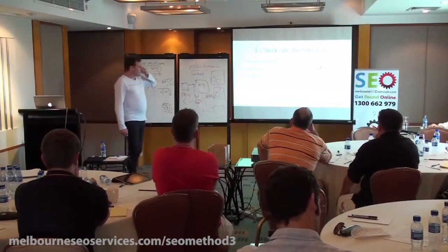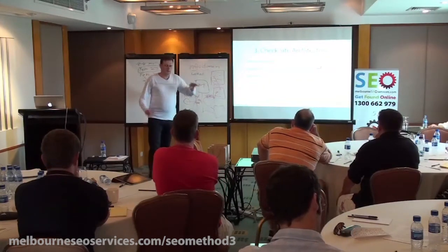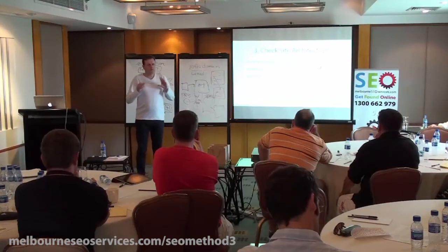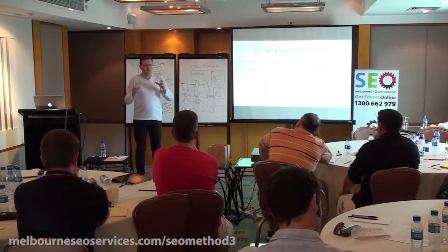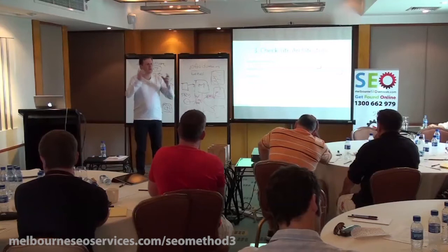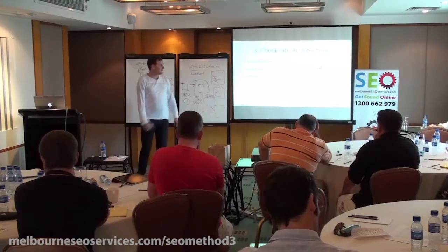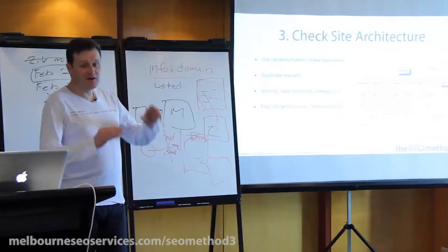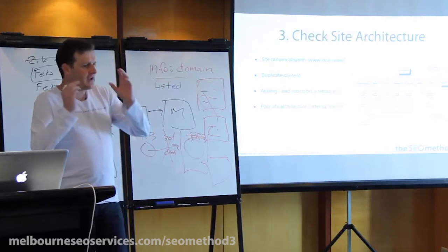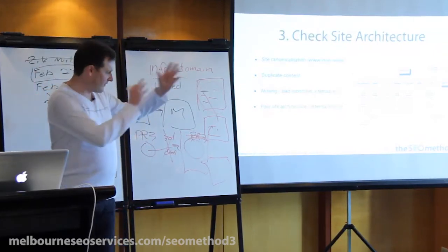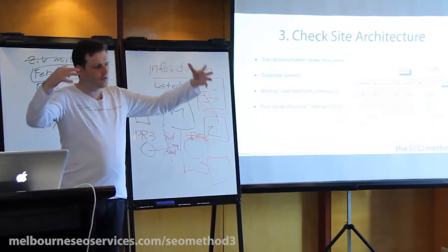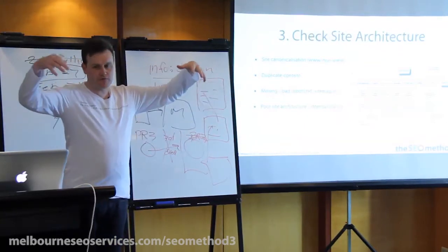Another big one is poor site architecture and internal linking. You'll often see sites that have grown organically — the webmaster, who's probably the business owner, has added extra pages over time. Creative Smiles is a great example of that: they've just banged on extra pages as they thought of things — case studies, something else — with no thought given to how the site should really be organised.